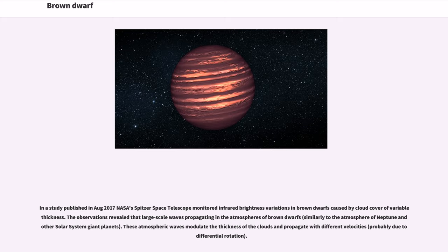In a study published in August 2017, NASA's Spitzer Space Telescope monitored infrared brightness variations in brown dwarfs caused by cloud cover of variable thickness. The observations revealed that large-scale waves propagate in the atmospheres of brown dwarfs. These atmospheric waves modulate the thickness of the clouds and propagate with different velocities.